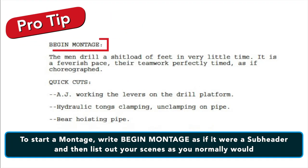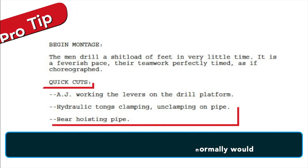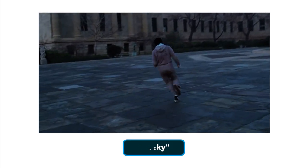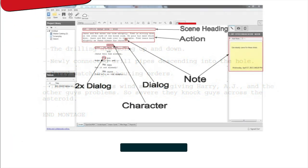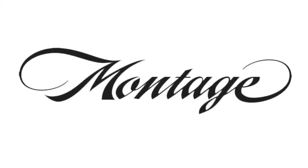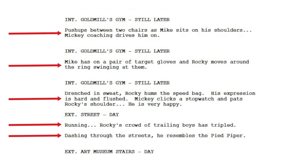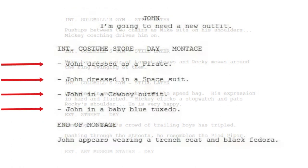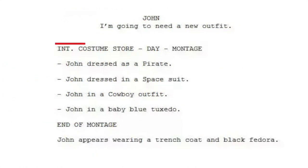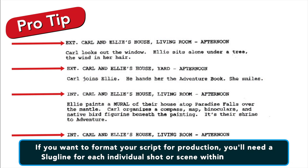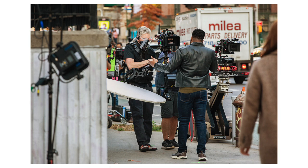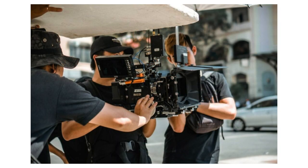Number nine is the montage. To start a montage, write 'BEGIN MONTAGE' as if it were a subheader, then list out your scenes as you normally would. Once the montage is over and Rocky finally runs up all those steps, close it off with 'END MONTAGE,' again written as a subheader — or scene heading if you're using screenwriting software. You have some leeway in how you write a montage; writers often prefer to list individual lines or lines set off by hyphens within the action to indicate different montage locations. Just know that if you want to format your script for production, you'll need a slugline for each individual shot or scene within the montage, because each location means a different setup and a whole separate set of production concerns.